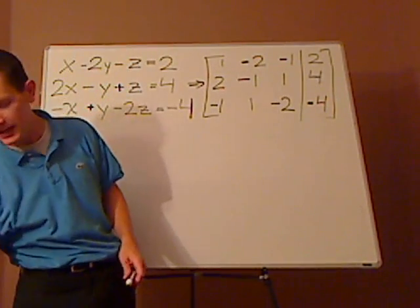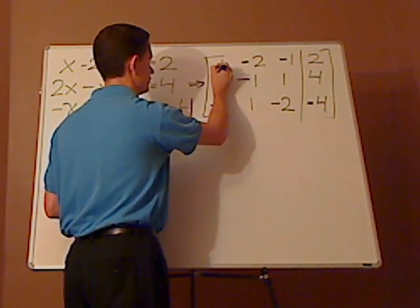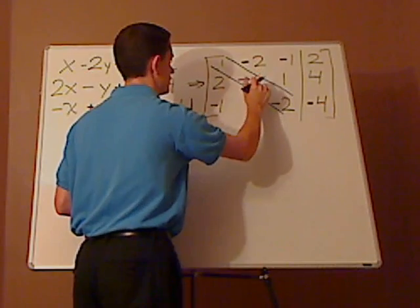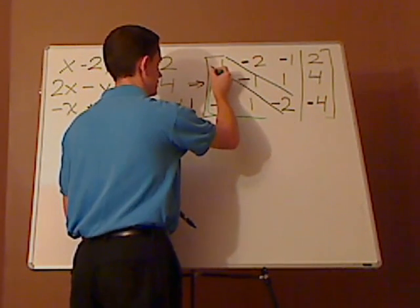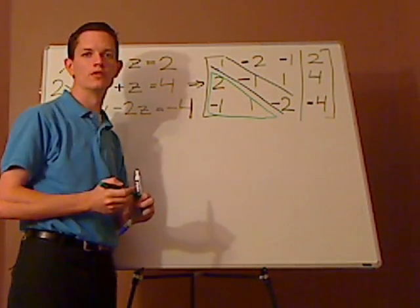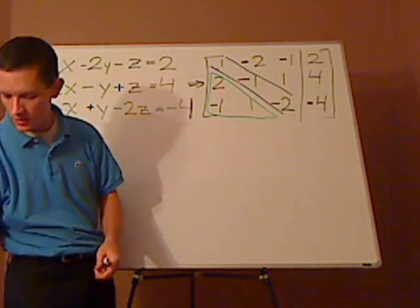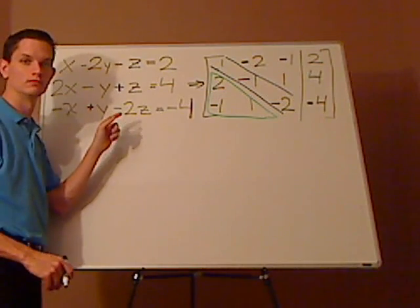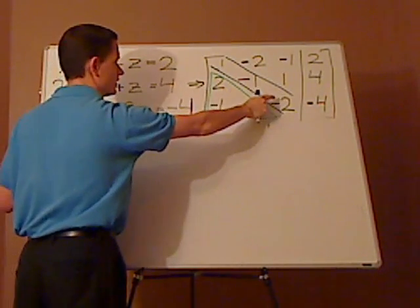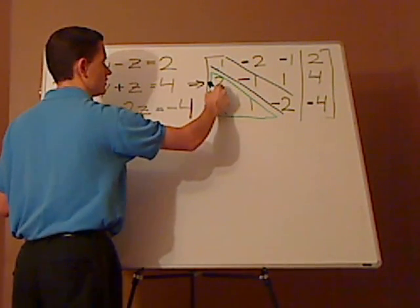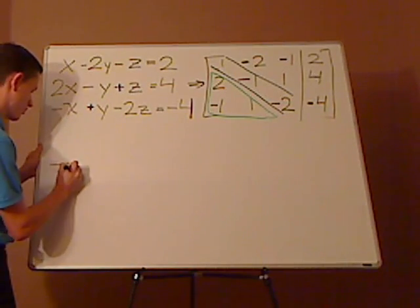Let's have a game plan. What you want to do is get the diagonal — you want all of those to be 1s. In the lower triangle of the matrix, everything below that diagonal, you want those to be 0s. Once you have that, you can do back substitution, and back substitution would be easier to solve than it is in this form. That's the whole point of doing Gaussian elimination.